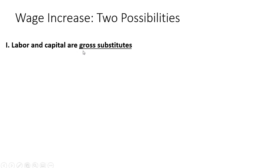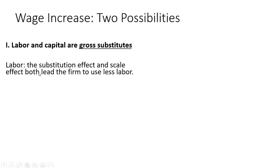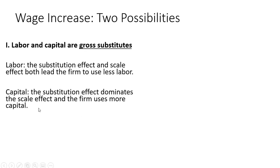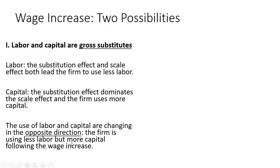Let's look at two possibilities between labor and capital following a wage increase. Labor and capital could be gross substitutes. The substitution effect and scale effect both lead the firm to use less labor. For capital, if the substitution effect dominates the scale effect and the firm uses more capital following the wage increase, we're dealing with gross substitutes — the use of labor and capital are changing in the opposite direction. The firm is using less labor but more capital following the wage increase.